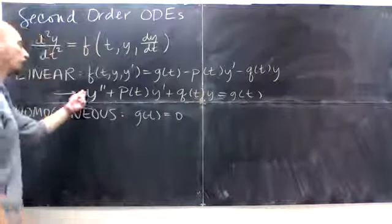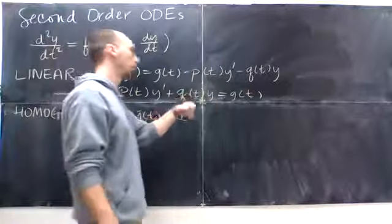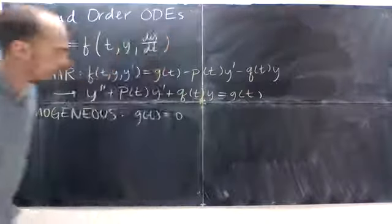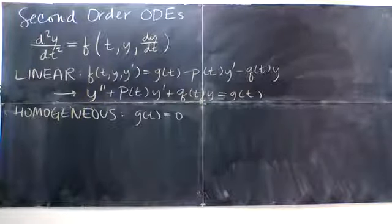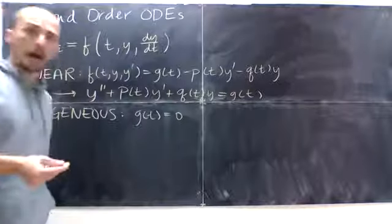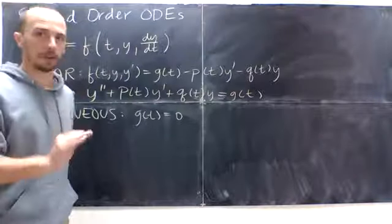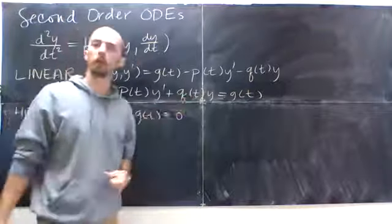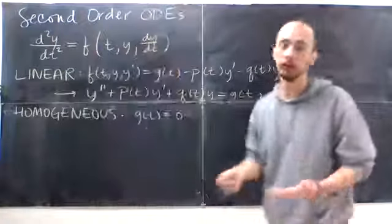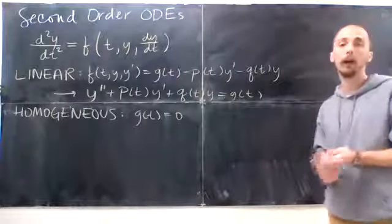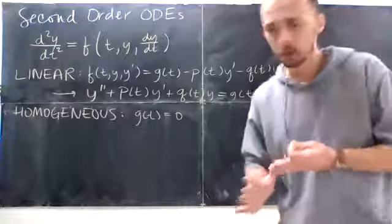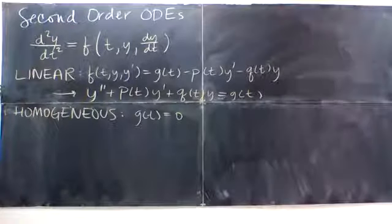So you have y double prime plus p(t)y prime plus q(t)y is equal to zero. And in this video, I'm going to stick just to where p(t) and q(t) are constants. That's actually kind of rich enough for us to talk about for a while.